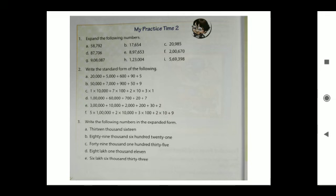Then what is the answer? 25,695. Another part B: 50,000 + 7,000 + 900 + 50 + 9. So what do we have to write? 57,959.